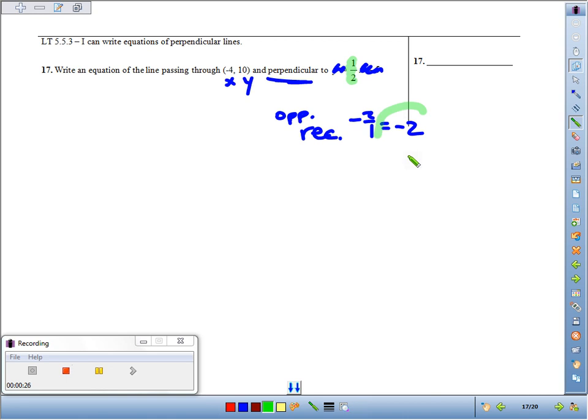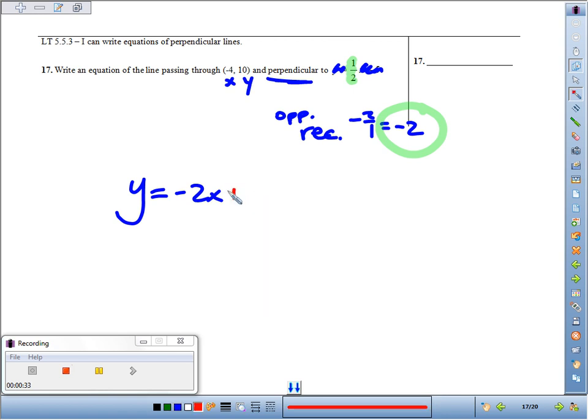Start your equation y = -2x. What you don't know is the y-intercept. We can find it though, because they gave us a point on the line, which means if it's on the line it has to be a solution to the equation.